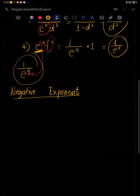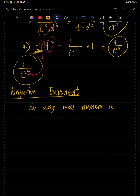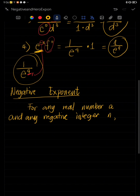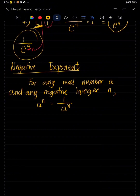Now, to deepen your understanding about negative exponents, let us discuss the definition. For any real number A and any negative integer N, A raised to N is equal to one over A raised to N. Let us have some examples to deepen your understanding of this definition.